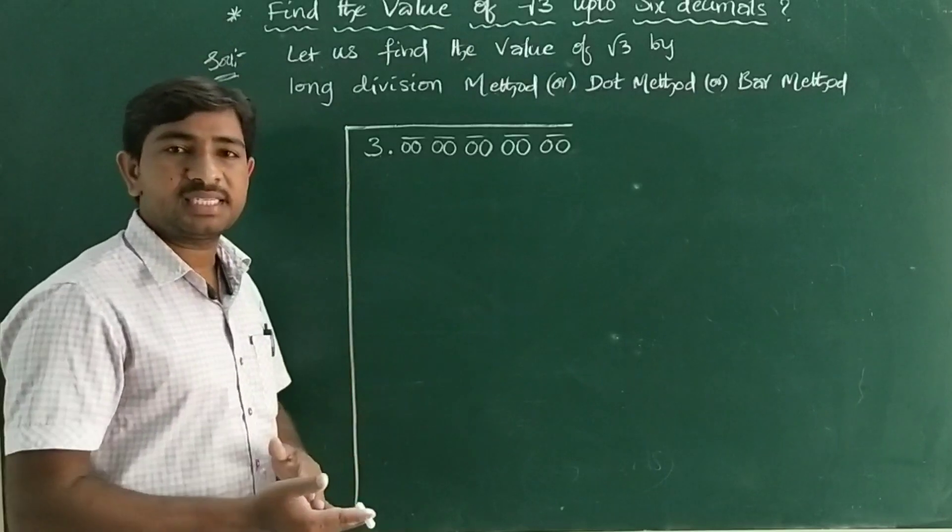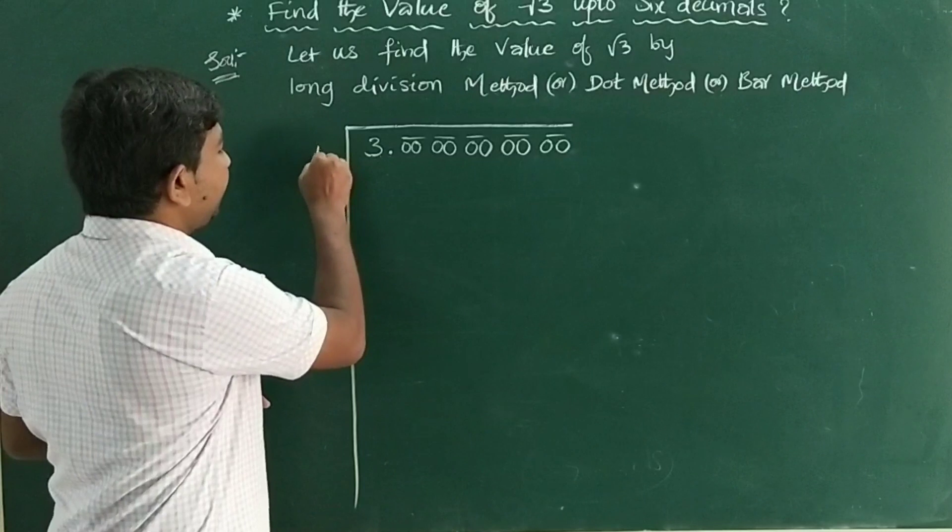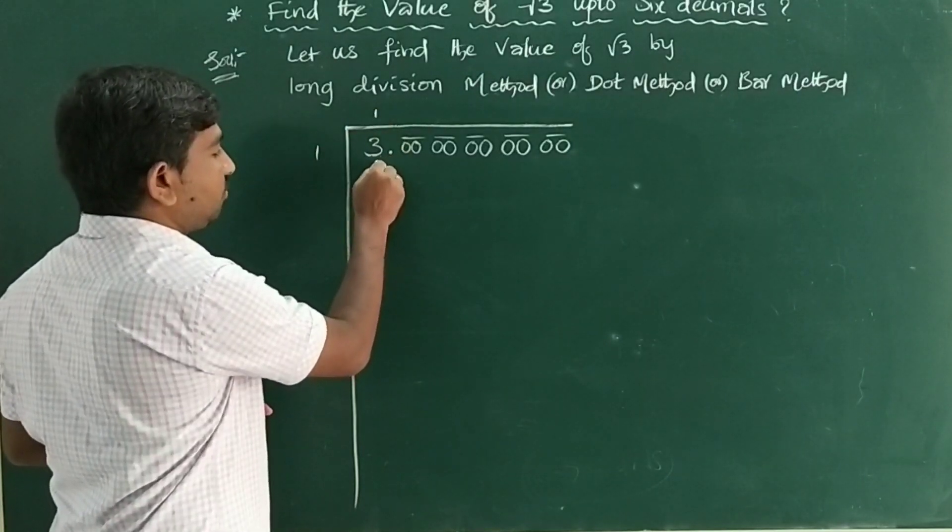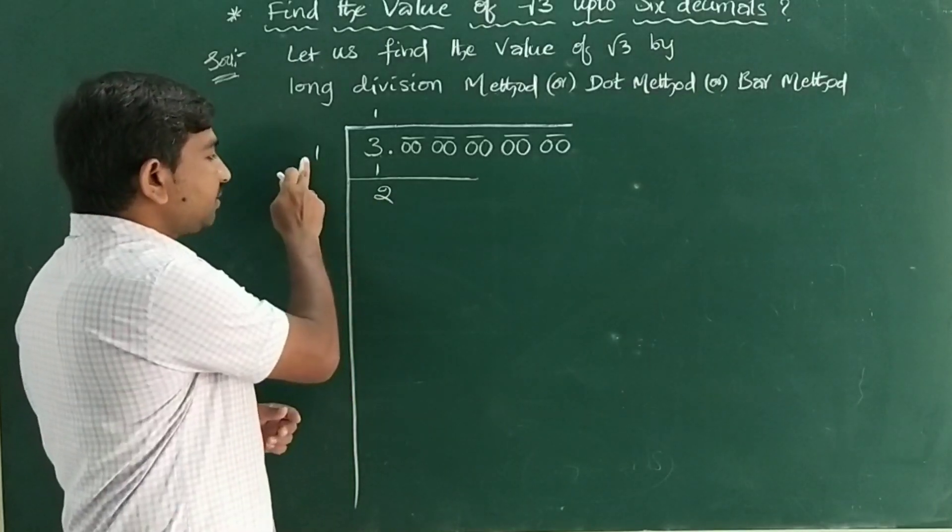Now, for the first bar, the nearest perfect square number is 1. So 1×1, visible right? 1×1. The remainder is 3 minus 1 equals 2.